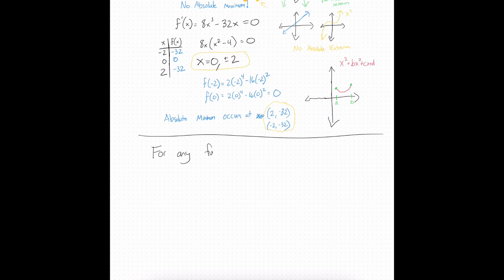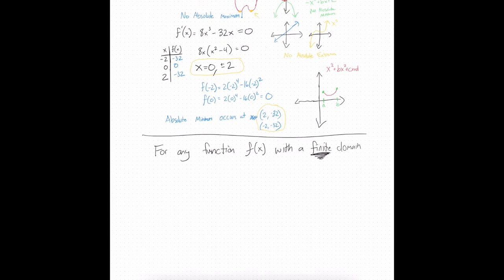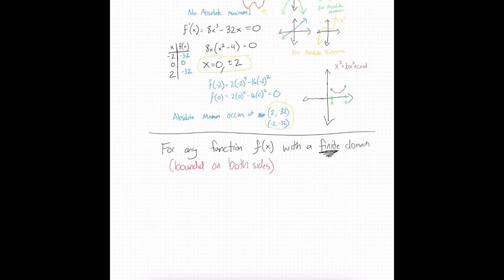Is there a way to manipulate this to where I will have an absolute max and absolute min? What if I just look at a specific range of x values — from a to b? If I stop the function at a and stop the function at b, I'm ignoring anything outside that range. Now do I have an absolute max and an absolute min? I absolutely do. I'm guaranteed to have both. So for any function f(x) with a finite domain — meaning it's bounded on both sides, with a set starting point and ending point — the absolute max and absolute minimum will exist. Both of them are guaranteed.